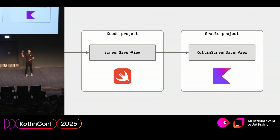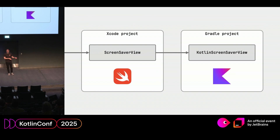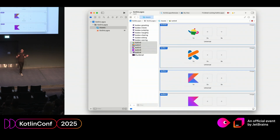The overall setup I ended up with has a screensaver view that is really just a 15-line Swift file, because I couldn't figure out how to move the entry point into Kotlin as well. But that's just the entry point — it forwards all of its calls into my Kotlin code, and that's where I have hundreds of lines of actual implementation in the Gradle project.